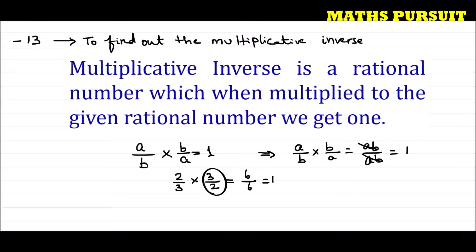Let us take one or two more examples. If the given number is only 6, what is the multiplicative inverse of 6? The number 6 can be put in rational number form p upon q, that is 6 upon 1. So the multiplicative inverse of 6 upon 1 will be 1 upon 6.